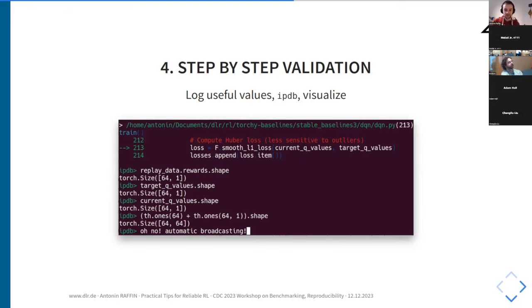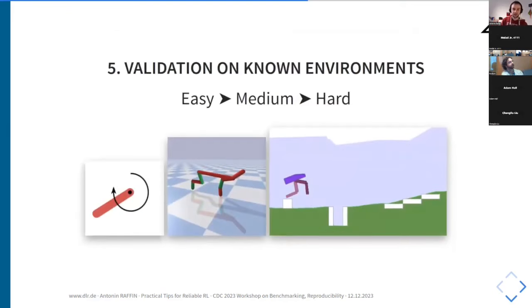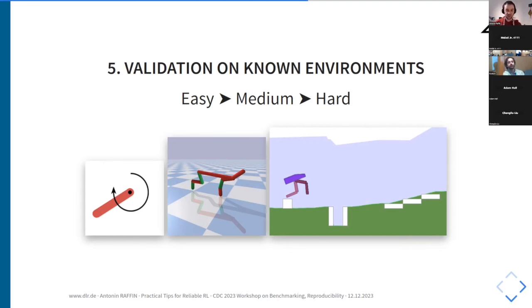Once you have an algorithm that looks not completely wrong, validate on known environments. Environments you know well allow you to quickly assess whether the learned behavior is optimal or if there are problems with exploration or elsewhere. Start with simple, easy problems and then move toward harder ones. When you finish benchmarking on the hardest problem you know, you can be confident your algorithm is not completely useless.